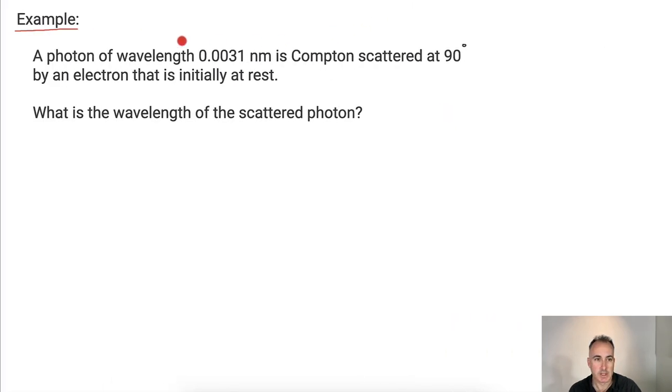Let's do an example. We have a photon that has a certain wavelength here, this is initial wavelength, lambda i. It's Compton scattered at an angle of 90 degrees, that means we know theta is 90 degrees. And the question is, the electron's initially at rest, what's the wavelength? We want lambda f.